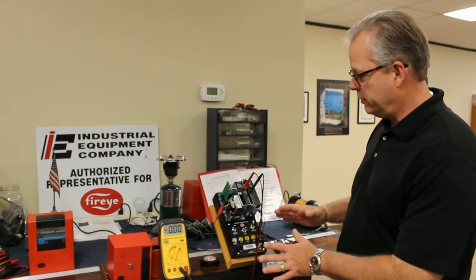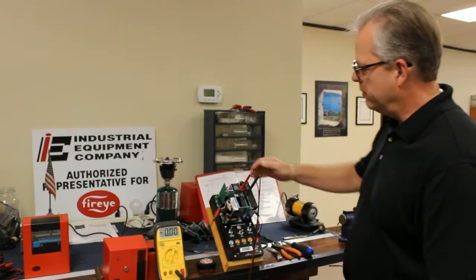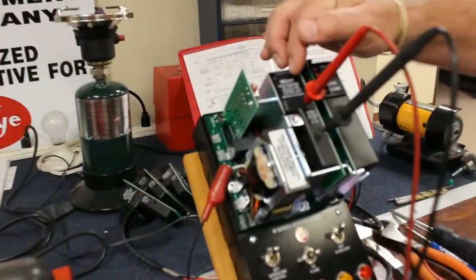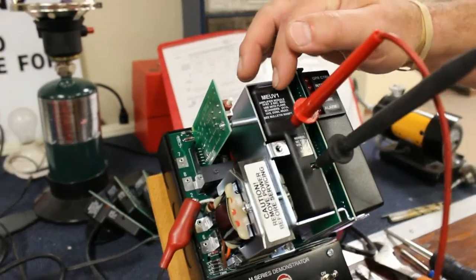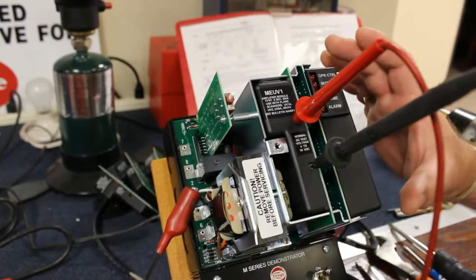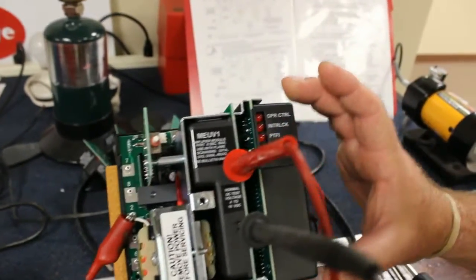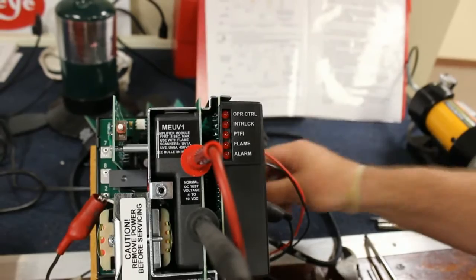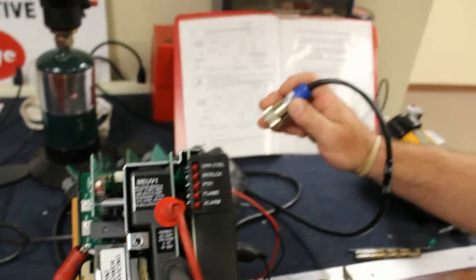but before I do, I'm going to talk about what we have here. We have an MEC120 chassis, an MEUV1 amplifier card that has a .8 second flame failure response time, and we have an MEP100 programmer in position, and I have it directly wired in to a UV1A3 scanner.